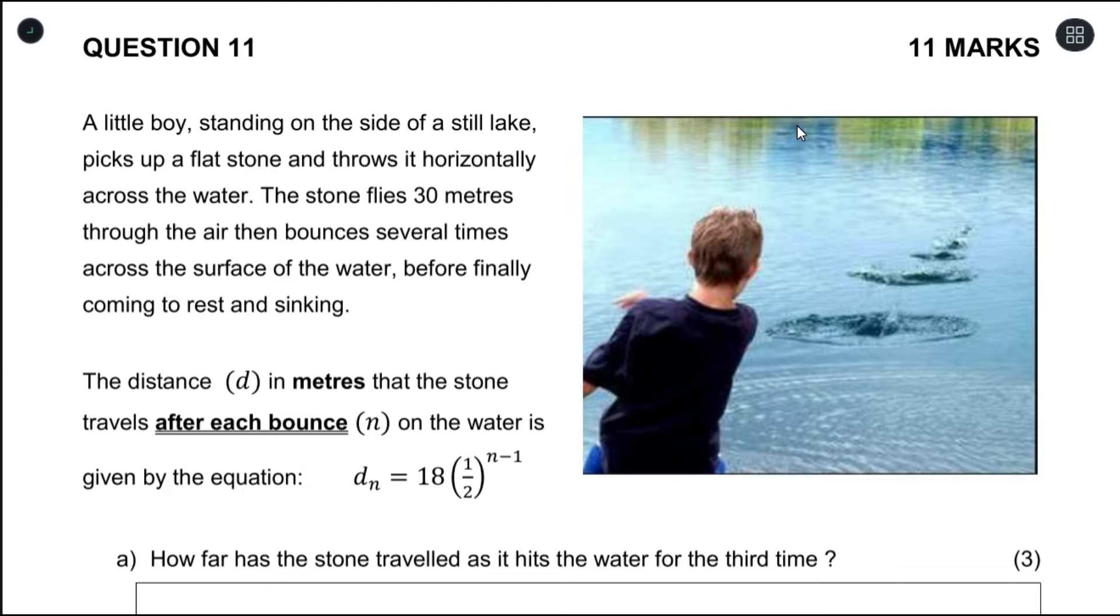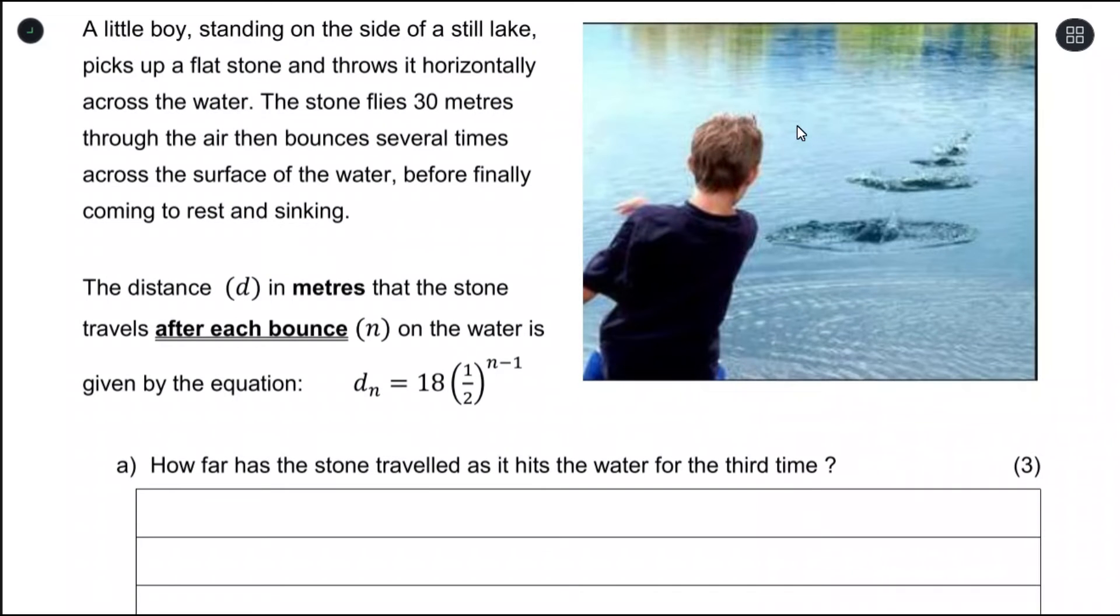The distance d in meters that the stone travels after each bounce - you can see they underlined and made it bold, after each bounce, because that's very important - is your value for n on the water, and is given by this equation: d_n equals 18 times one-half to the power of n minus 1.